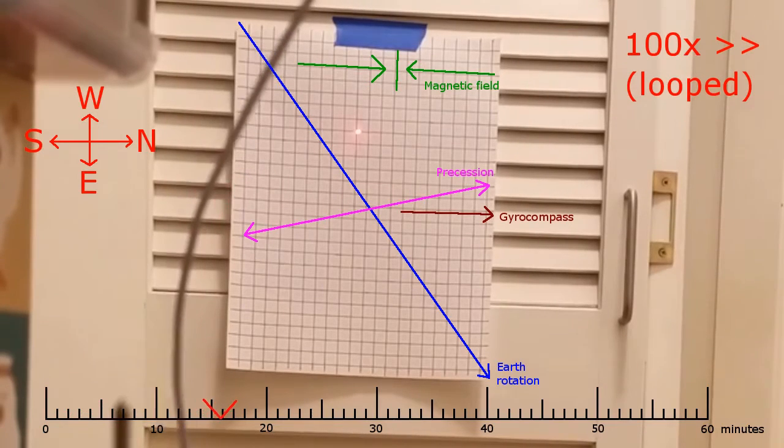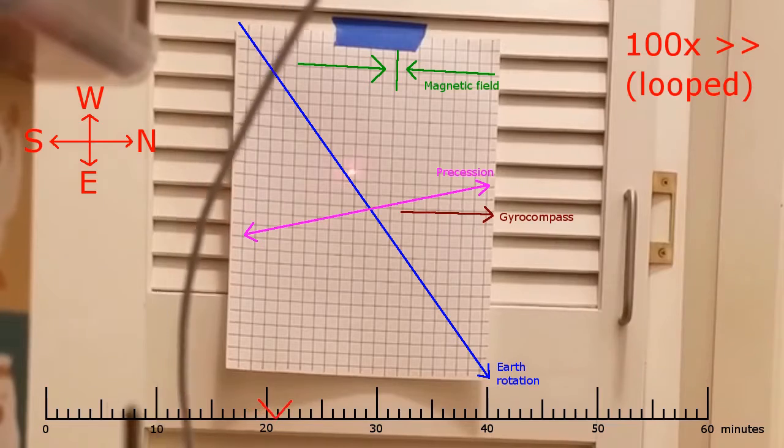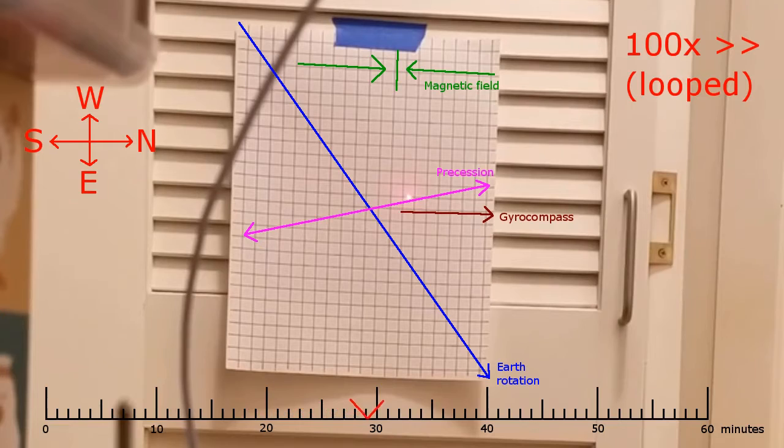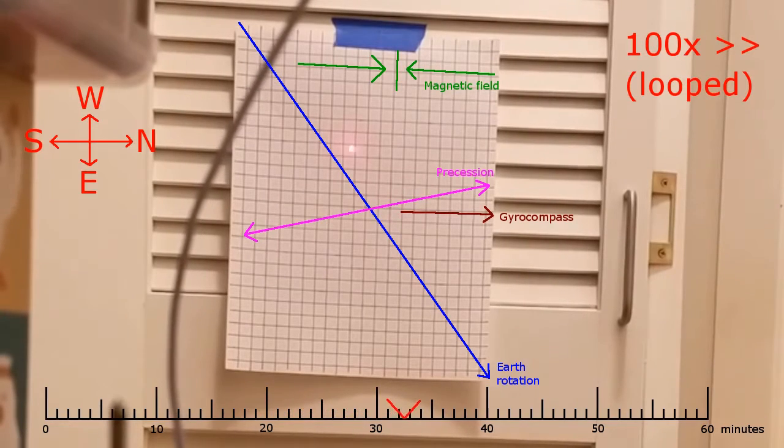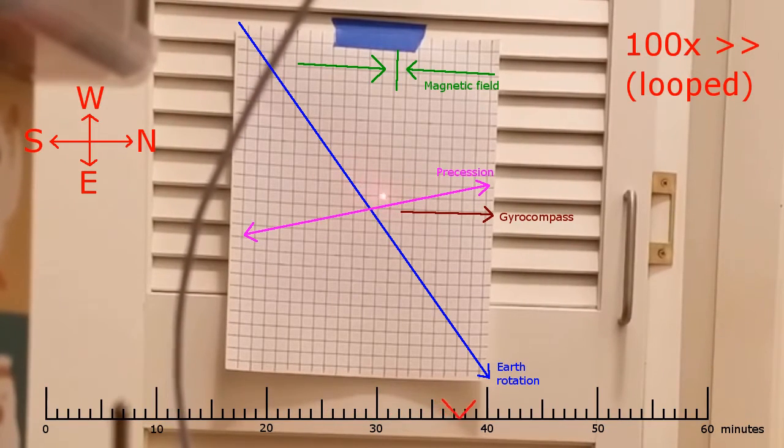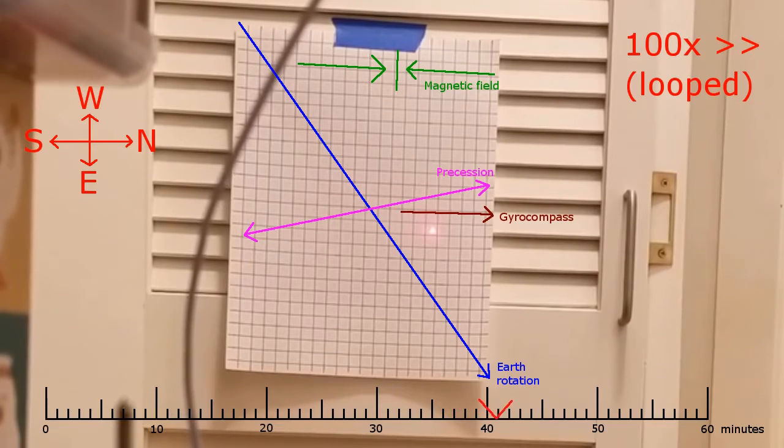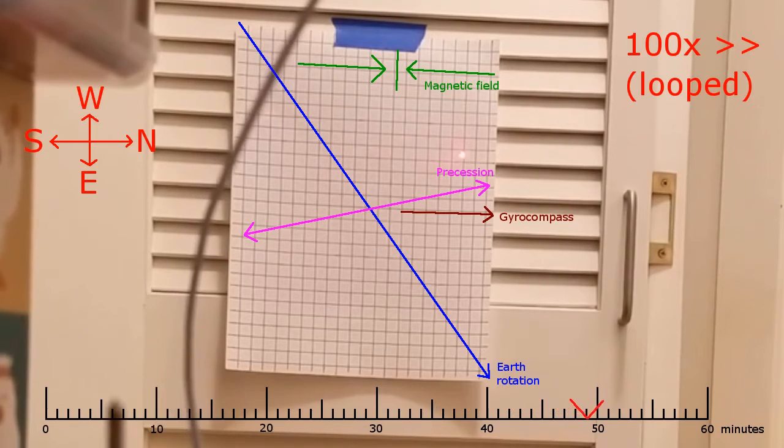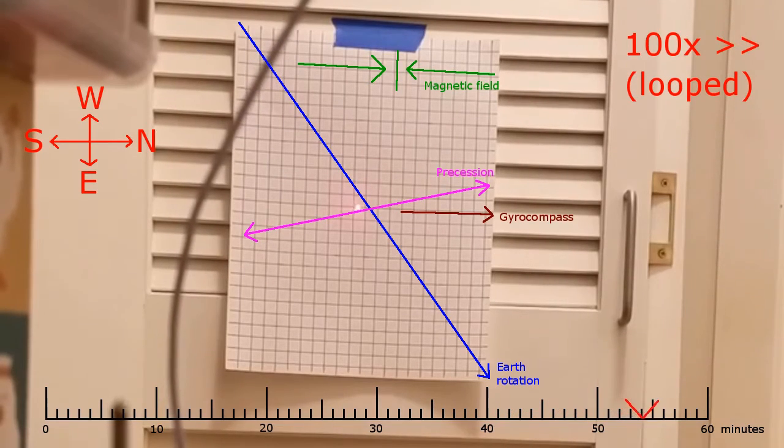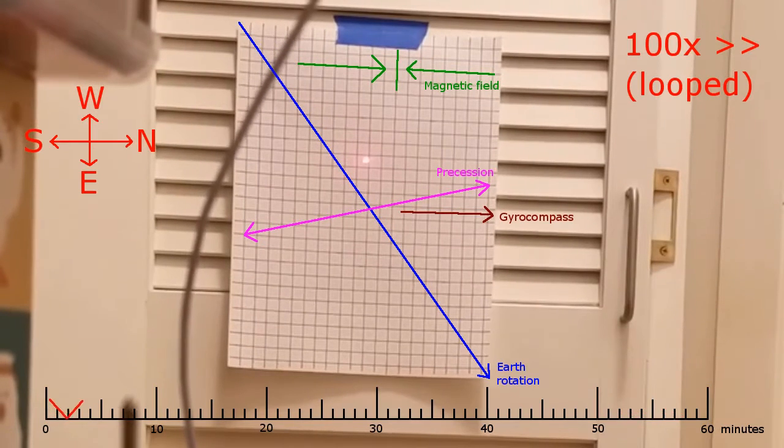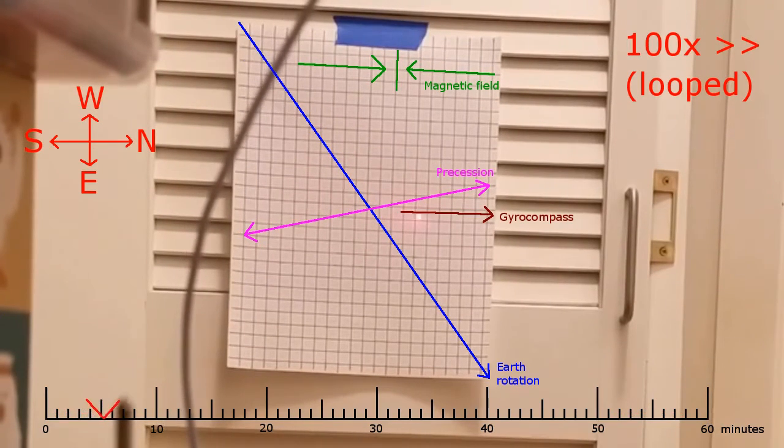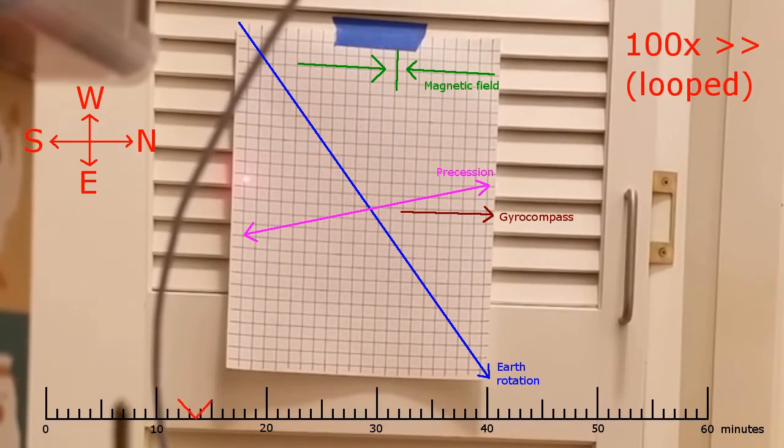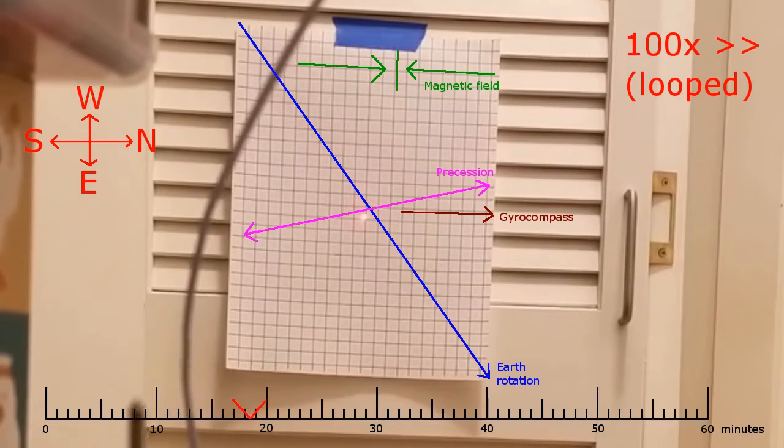I should mention that the reason I set this up so the spin axis points west rather than east is so that the motion I'm trying to measure does not line up with either of the precession directions. If you point the spin axis east, then one of the precession directions will be pretty similar to the Earth rotation direction. That makes it possible to fool yourself into thinking you're measuring rotation when all you've done is slightly unbalanced the gyroscope and the motion is due to precession. So it's important with a setup like this to point the spin axis west rather than east.